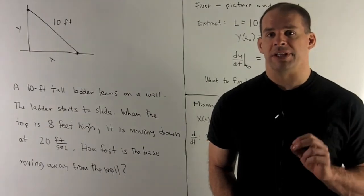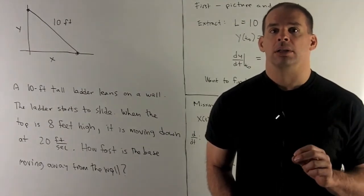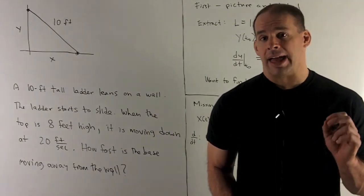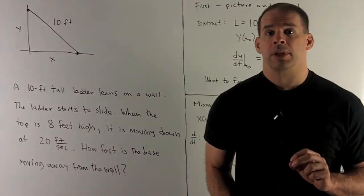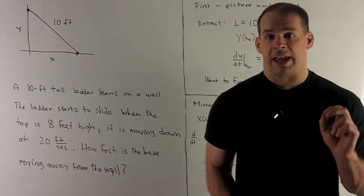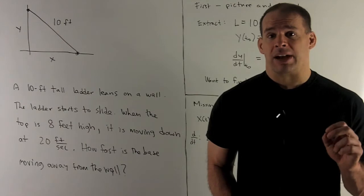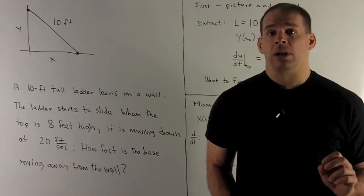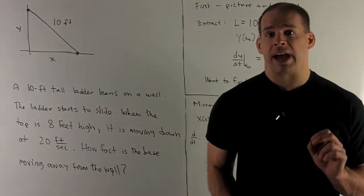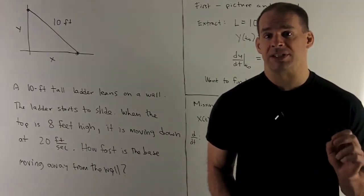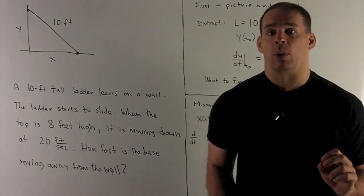A ladder, 10 feet tall, leans against the wall. The ladder begins to slide. When the top of the ladder is 8 feet high, the top of the ladder is moving down at 20 feet per second. How fast is the base of the ladder moving away from the wall?